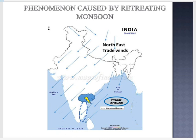Because of the retreating monsoon, two important phenomena occur. First, the Tamil Nadu coast receives rainfall during this period. Second, cyclonic depressions form over the Bay of Bengal due to the Coriolis force. These cyclonic storms are very destructive — the thickly populated deltas of Godavari, Krishna, and Kaveri are their preferred targets, and every year cyclones bring disaster here. A few cyclonic storms also hit the coasts of West Bengal, Bangladesh, and Myanmar, though such storms are less frequent in the Arabian Sea.